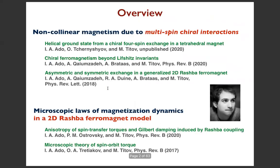This talk is basically designed to advertise the works of Ivan Ado, who is about to defend his PhD thesis. I will talk first about non-collinear magnetism and interactions in systems called multi-spin curl interactions - I will just try to advertise this terminology. In the second part, I will talk about a particular microscopic model of magnetization dynamics and what you can learn from it compared to phenomenological models.